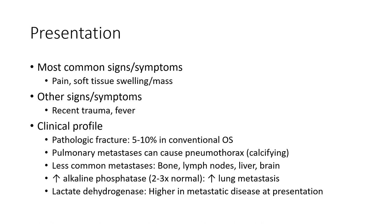Increased alkaline phosphatase — two to three times normal — is associated with increased lung metastasis. Elevated LDH is also a marker seen with metastasis at presentation.